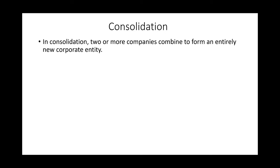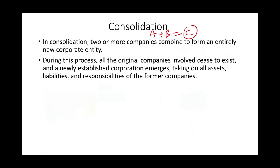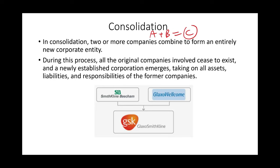Consolidation, on the other hand, is another major fundamental change where two or more companies combine to form an entirely new company — so A plus B becomes C. In a merger, company A plus company B results in company B surviving; in a consolidation, A and B equal a new entity C. A real-world example is SmithKline and GlaxoWelcome combining to form GlaxoSmithKline.